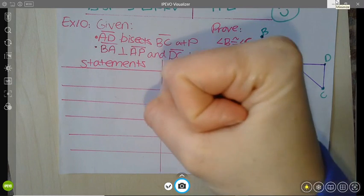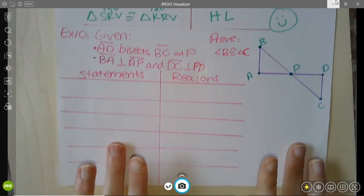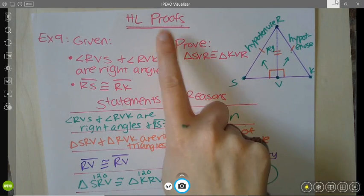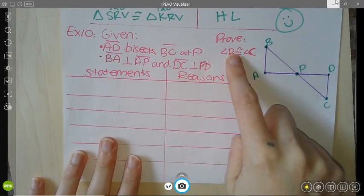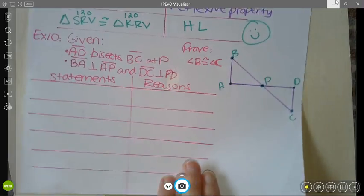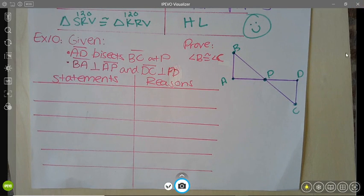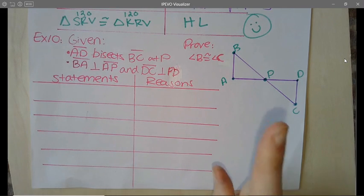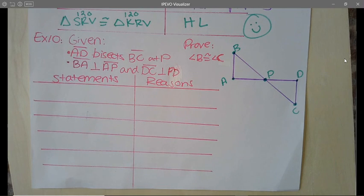Welcome back! We're now tackling Example 10, which is another proof. We're in the HL theorem section, so HL will likely appear. This time we are not proving triangles are congruent like the last example — we're proving something else. That's a good hint that CPCTC will pop up. But remember: to use CPCTC, you first have to show triangles are congruent, and I have a feeling we'll use the HL theorem.